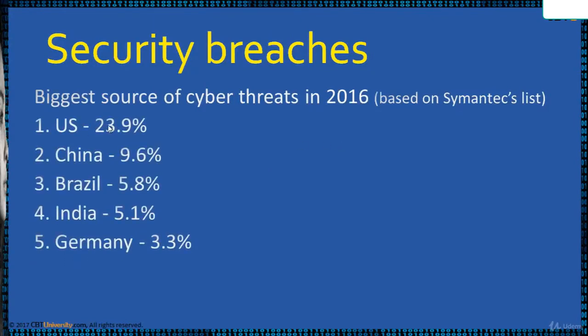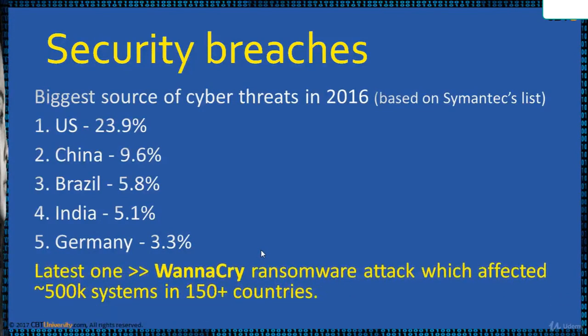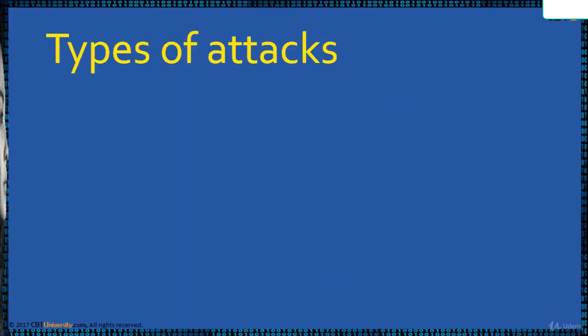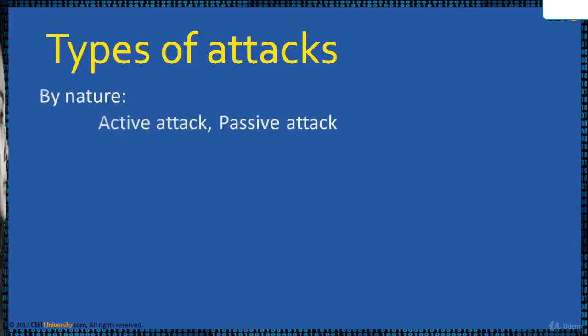Here you can see the US tops the list, and 50 percent of security breaches happened in five countries. A latest example being WannaCry ransomware — this attack affected half a million systems in 150 plus countries. Types of attacks on a target are classified by nature: active attack and passive attack.